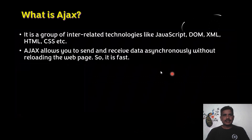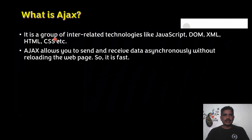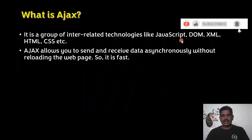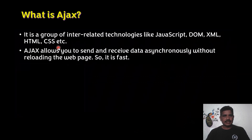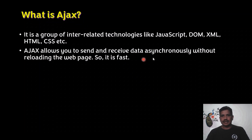What is Ajax? Ajax is a group of interrelated technologies like JavaScript, DOM, XML, HTML, and CSS. Ajax is not a language — Ajax is a framework. Ajax allows you to send and receive data asynchronously without reloading the web page, so it is fast.